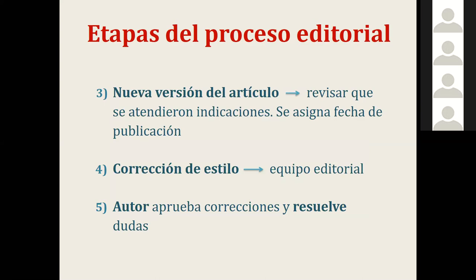La tercera etapa es la nueva versión del artículo. Una vez que el autor recibe las observaciones de los dictaminadores, trabaja la nueva versión, atiende las sugerencias y la vuelve a enviar a la plataforma. El editor se dedica puntualmente a revisar que se hayan atendido todas las indicaciones y, una vez aceptado, se asigna fecha de publicación. Es importante que el editor mantenga comunicación constante con el autor, pues a veces no atienden algunas observaciones y es necesario solicitarles correcciones adicionales.